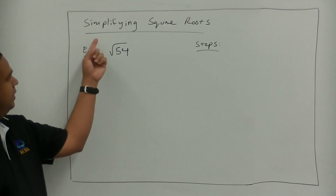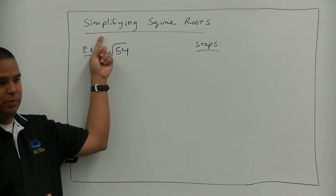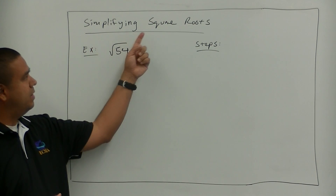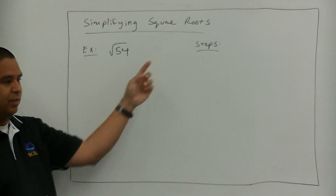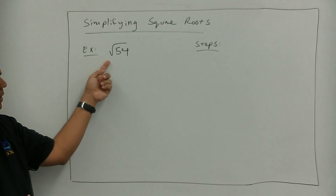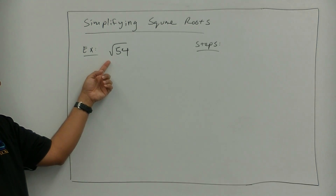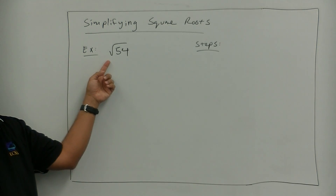Alright class, today we're going to learn how to simplify square roots. So we're going to look at our first example: the square root of 54.